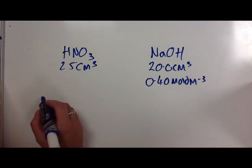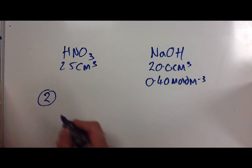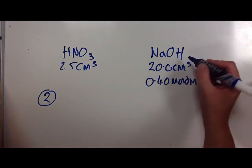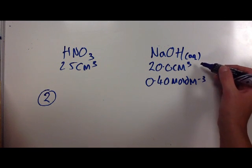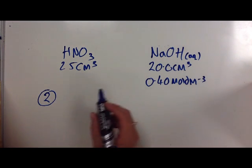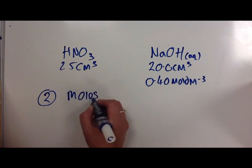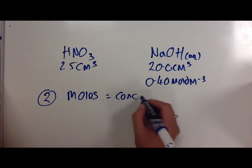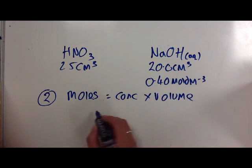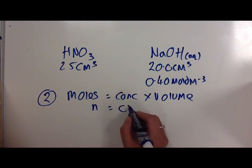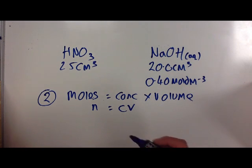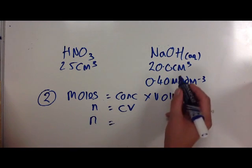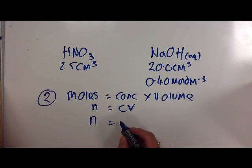If step one was writing the equation, step two is finding the number of moles of sodium hydroxide. Sodium hydroxide is aqueous, which tells us it's a solution. We're given one value which is a volume and one which is a concentration. So, straight away, you should be thinking, moles equals concentration times volume. I use the shorthand N equals CV. Vacuum cleaners are noisy. However you need to remember it, learn this equation.